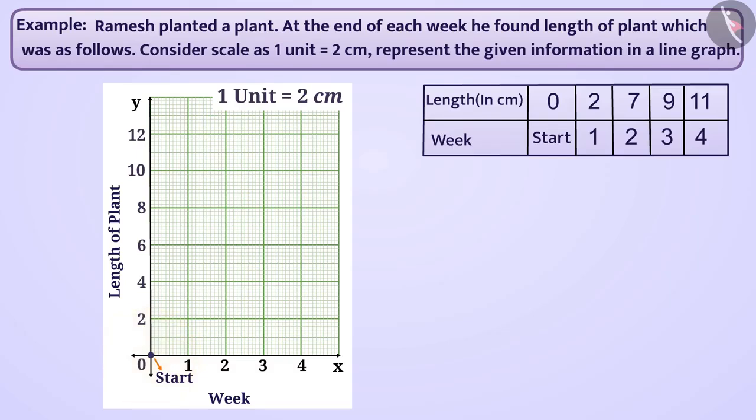Initially, the plant length is 0 in 0 position. Therefore, we will mark the point at 0. Similarly, the length of plant in week 1 is 2 cm. To denote this length, we will mark the points at the intersection of the vertical line of week 1 and the horizontal line of 2 cm. Similarly, the length of plant in week 2 is 7 cm. To denote this length, we will mark the points